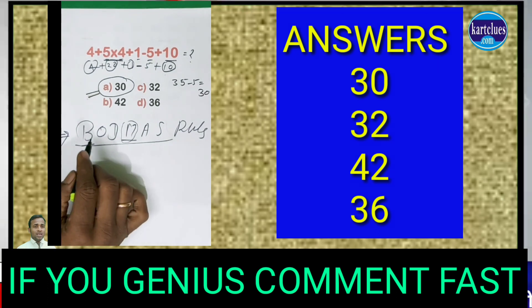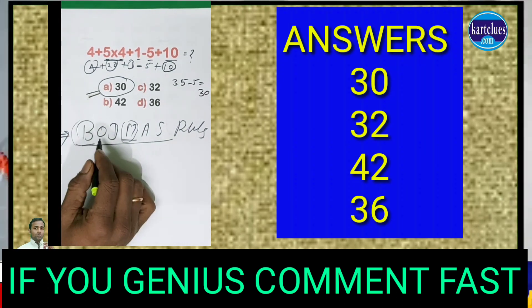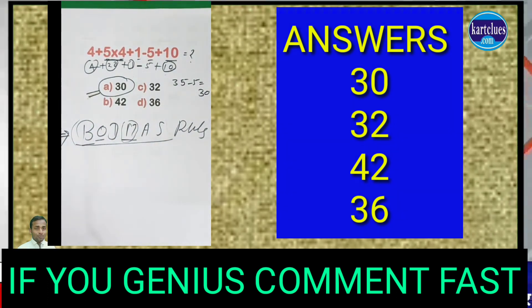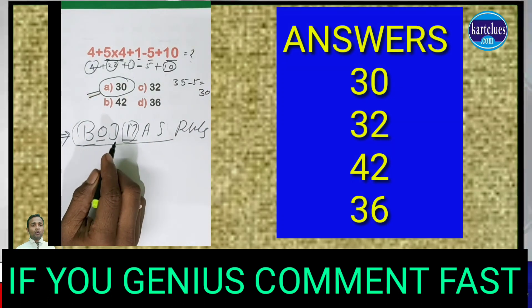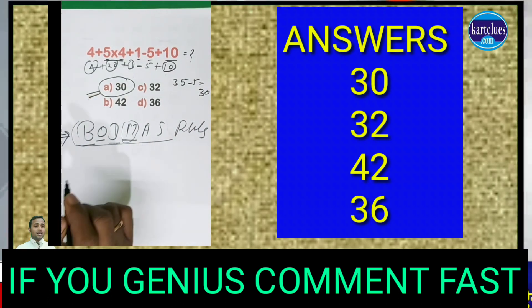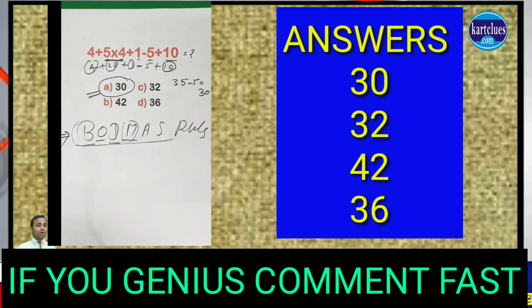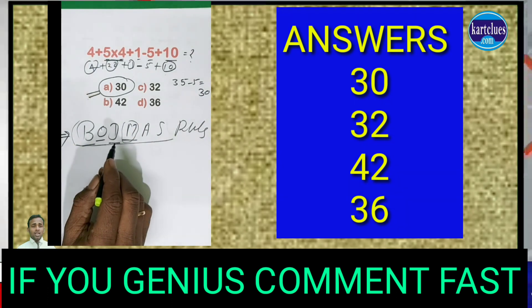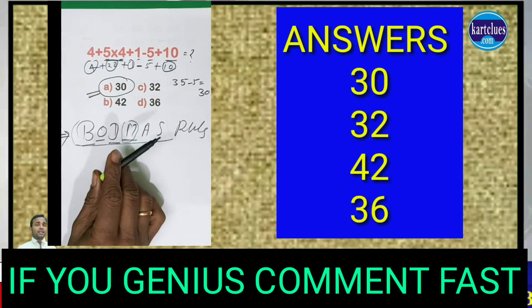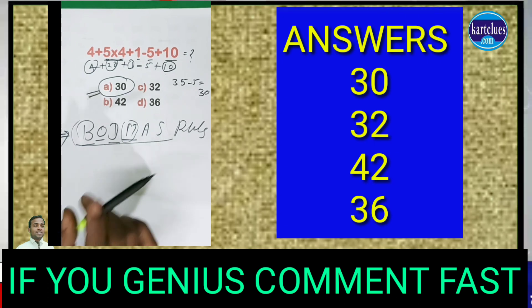First you have to do all the multiplication or brackets, and after any other things available in the equation you have to solve that one. And after that divide if any divide symbol is available in the equation. And after that multiplication, after that addition, and after that subtraction.